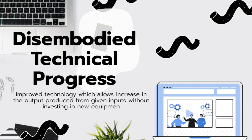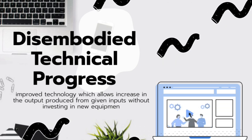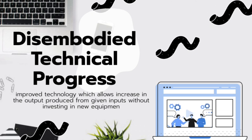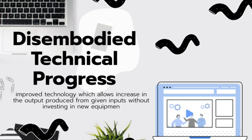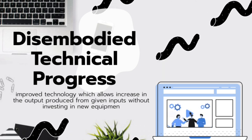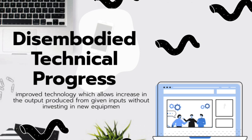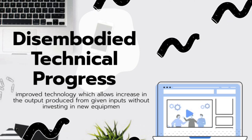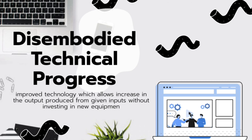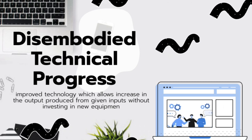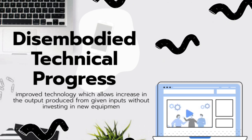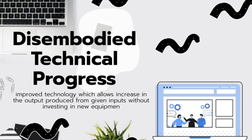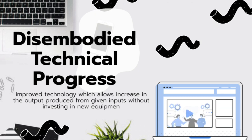Disembodied technological progress is improved technology which allows an increase in output produced from given inputs without investing in new equipment. In the real world, many inventions do not require replacing the entire or some parts of equipment. It can be improved for better use depending upon the change required. Hence, technological progress embodied or disembodied is a matter of degree.